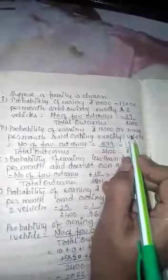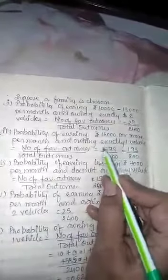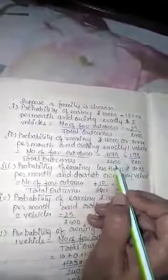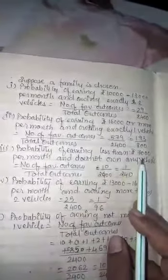Probability of earning 16,000 or more and having exactly one vehicle: from the table, there are 579 families with 16,000 or more income and one vehicle. Total outcomes is 2400. So P = 579/2400. Cutting by 3, we get 193/800.